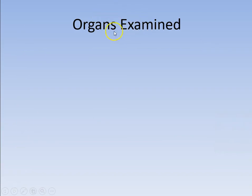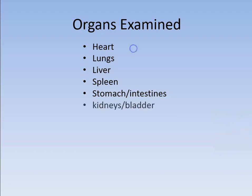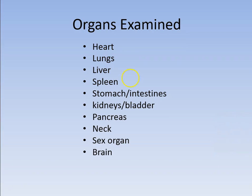What are some of the organs examined during a typical autopsy? Obviously, we take a look at the heart, the lungs, the liver, the spleen — that's where the red blood cells go to die — stomach and intestines, we look at stomach content, the kidneys and the bladder, the pancreas, the entire neck region — strangulation cases make this a good place to find evidence — the sex organs, and of course the brain.